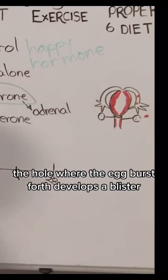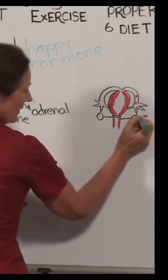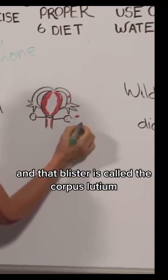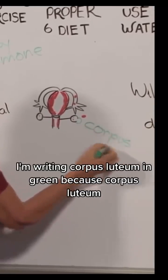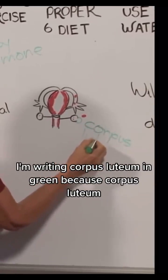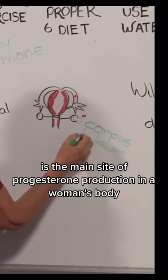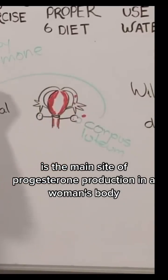The hole where the egg bursts forth develops a blister. And that blister is called the corpus luteum. I'm writing corpus luteum in green because corpus luteum is the main site of progesterone production in a woman's body.